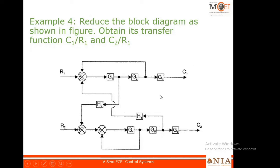Before we enter into this block diagram reduction, students should remember that a transfer function is a model which will have only one output and one input — it gives a relationship between a single output and a single input. There is another model called the state space model which gives a relationship between multiple outputs and multiple inputs, but transfer function does not have that capability.